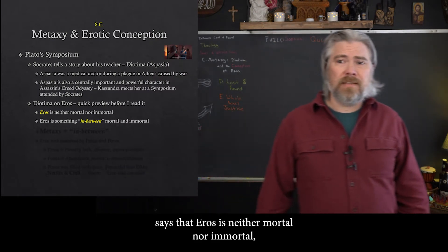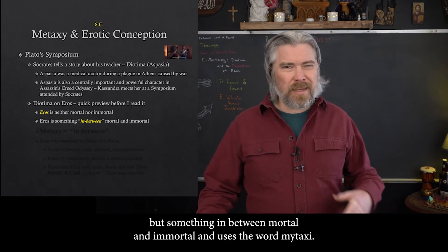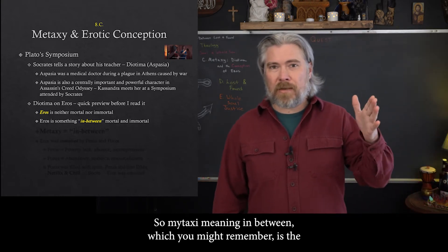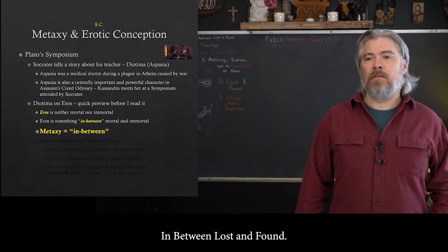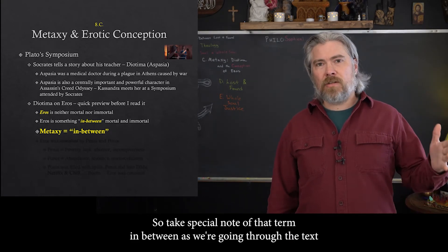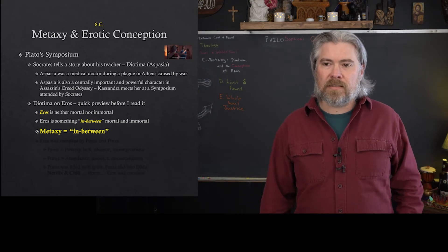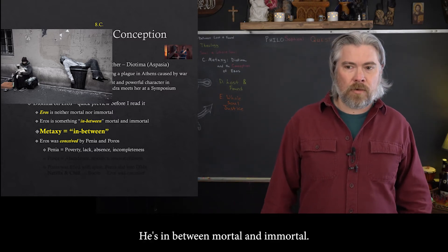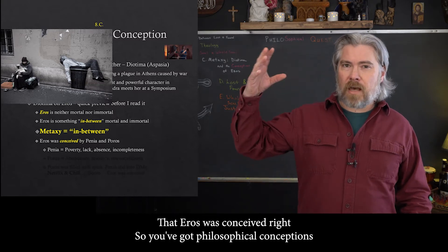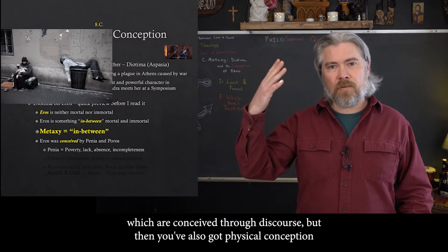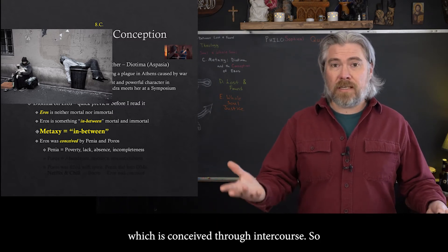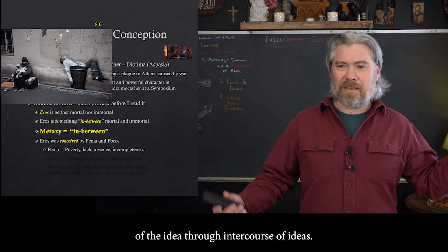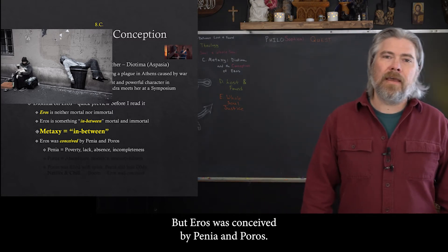Diotima says that eros is neither mortal nor immortal, but something in between mortal and immortal — and she uses the word 'metaxi,' meaning in-between, which is the title of this chapter. Take special note of that term in-between as we go through the text. She says that eros was conceived — we've got philosophical conceptions conceived through discourse, and physical conception conceived through intercourse. Here we're talking about the conception of the idea through intercourse of ideas. Eros was conceived by Penia and Poros.